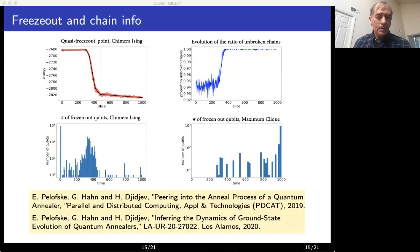So we can compute a point we call a quasi-freeze-out point based on the slicing plot by fitting a degree one polynomial. This is shown on the plot on the top left and the quasi-freeze-out point is shown in green. We also studied the evolution of the number of broken chains, the plot on the top right, and how the number of frozen qubits changes over time. These are the two plots on the bottom. We call a qubit frozen at some time point if its value at the moment, plus one or minus one, stops changing all the way until the end of the anneal and stays the same. So details about these experiments and others can be found in the papers listed on the bottom.